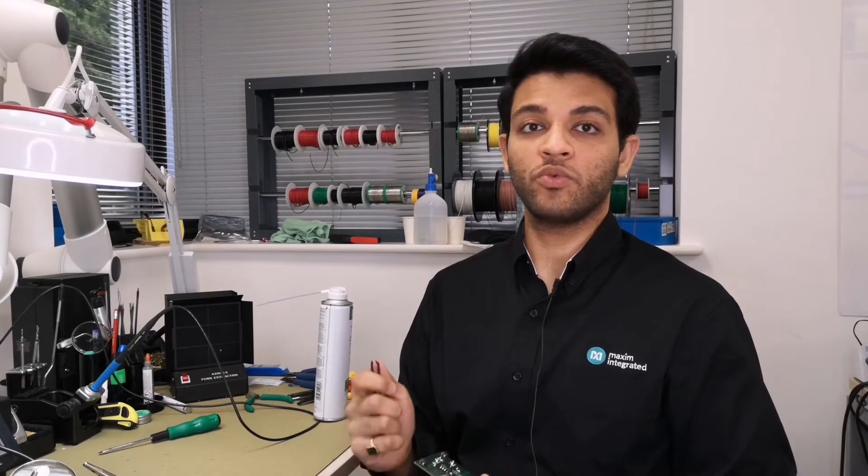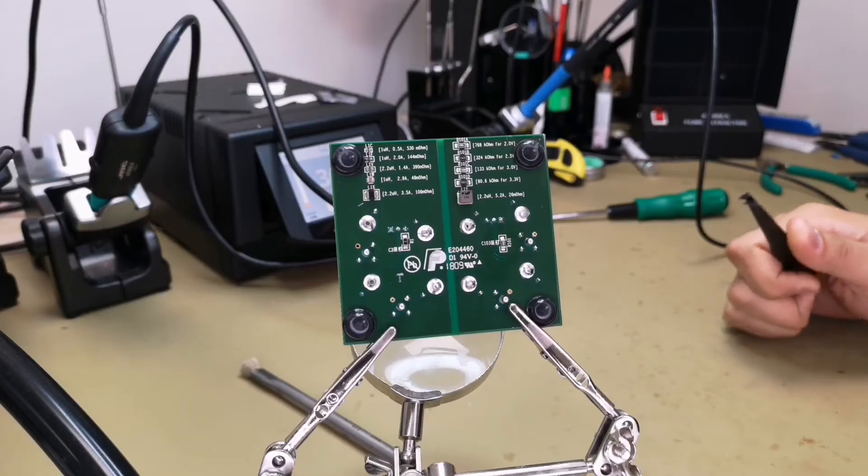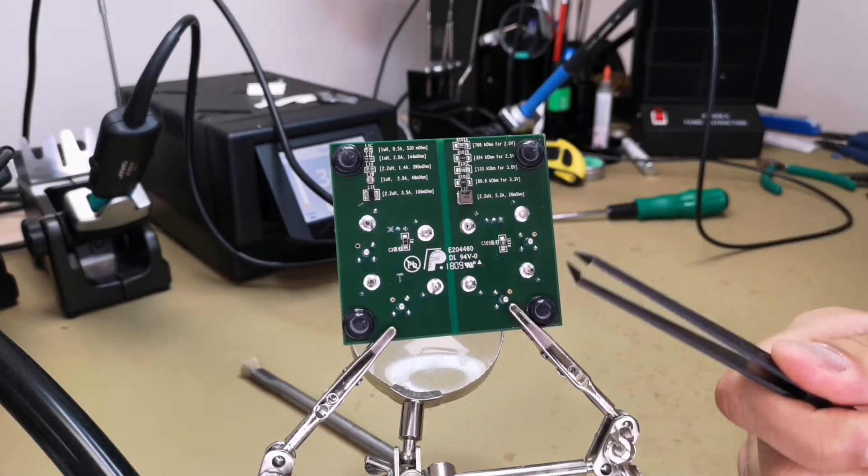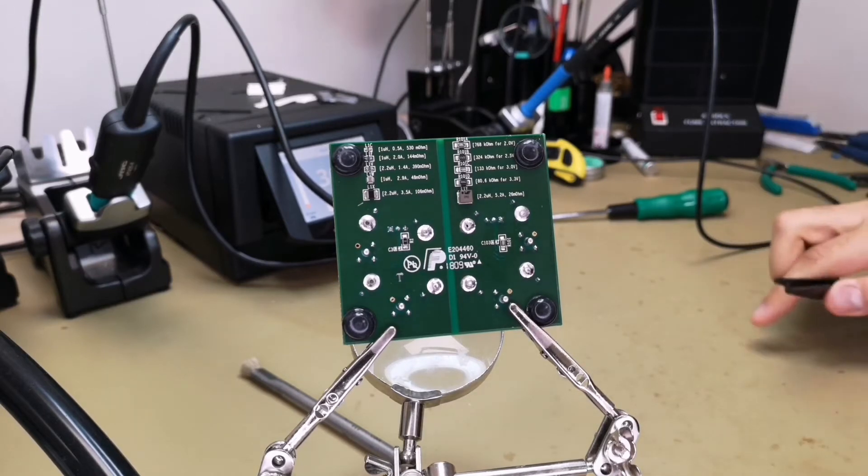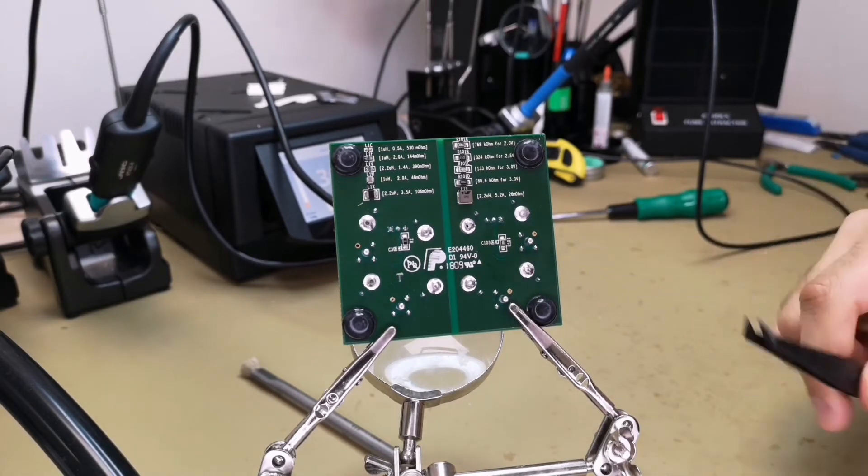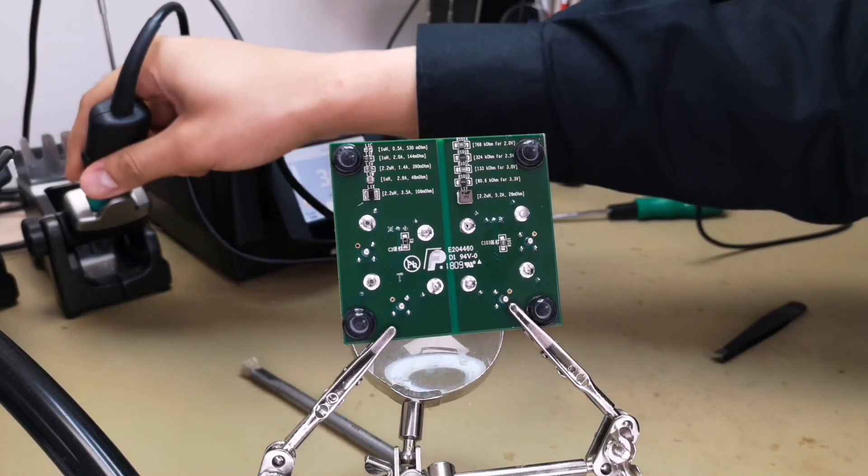I'm going to change the output voltage of the EVKit by changing the R-select resistor, which corresponds to R101 on the EVKit. I'm going to change it to 10 kilo ohm to get an output voltage of roughly 4.5 volts.